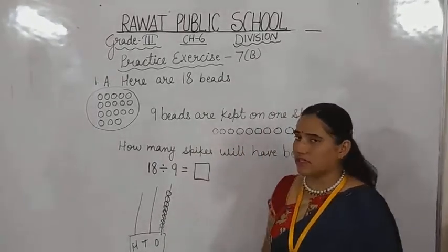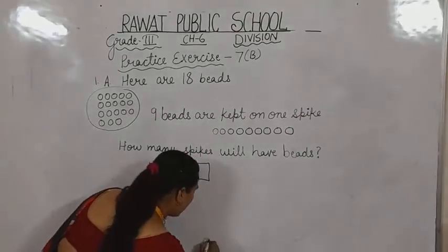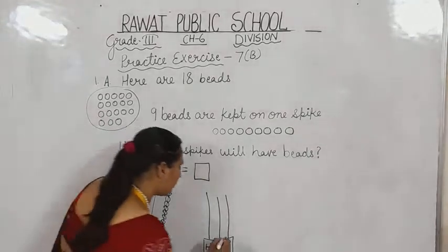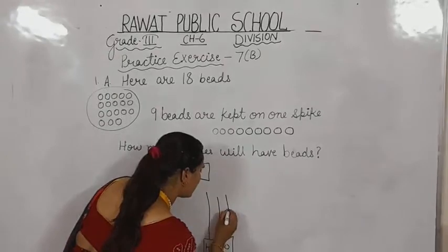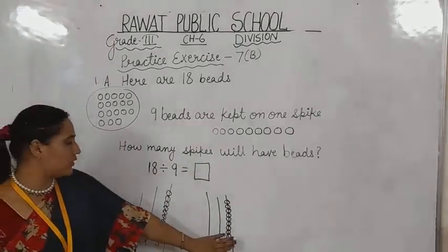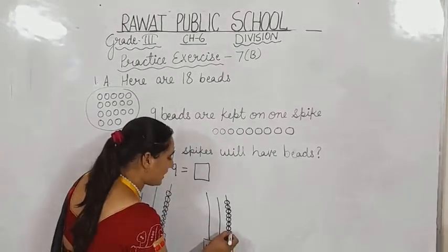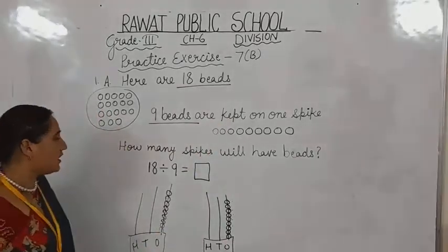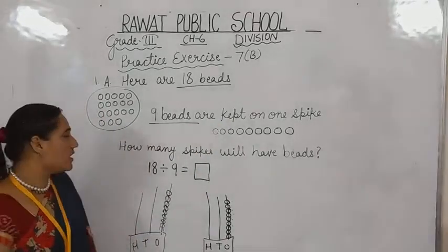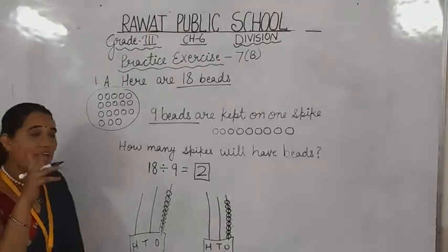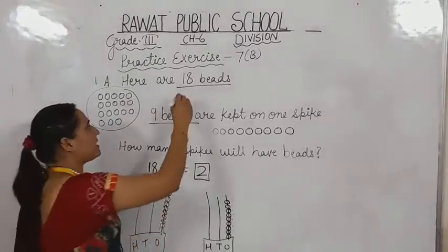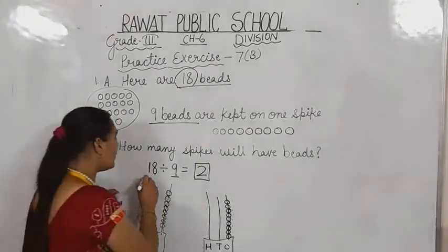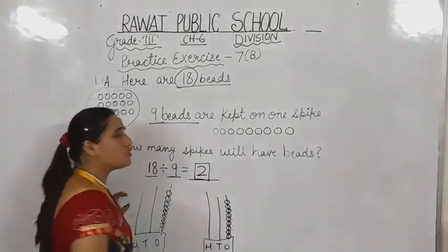One spike is already given by the question. Now we'll add one more spike and we are going to make again nine beads on that spike, then count whether they complete 18 or not. We draw one through nine on the second spike. Counting on: 10, 11, 12, 13, 14, 15, 16, 17, 18 — yes, total 18 beads, two spikes. So 18 divided by 9 equals 2.